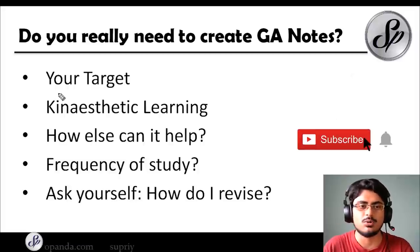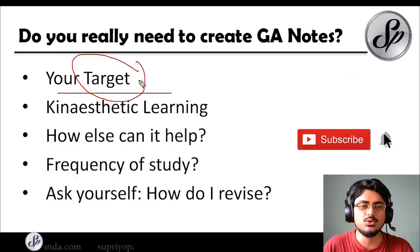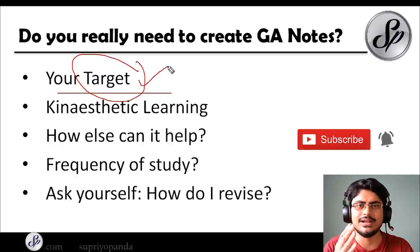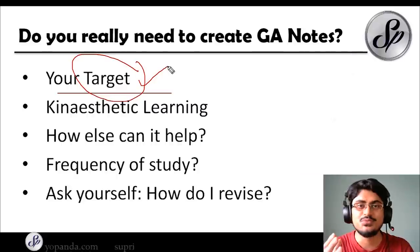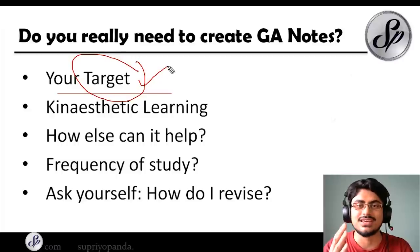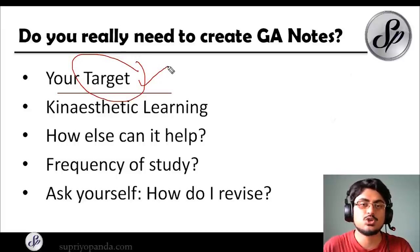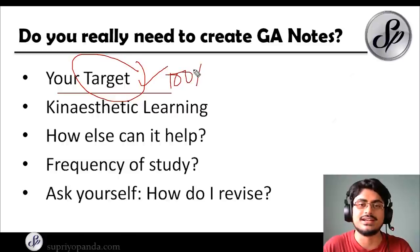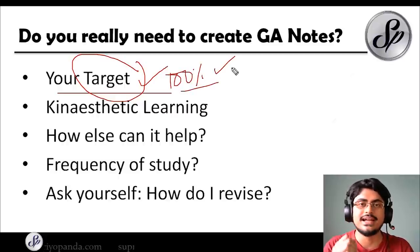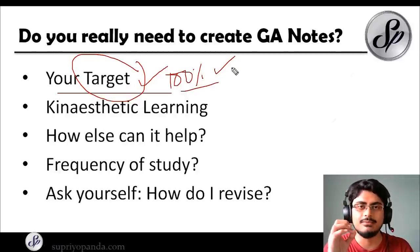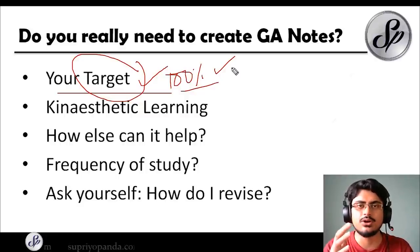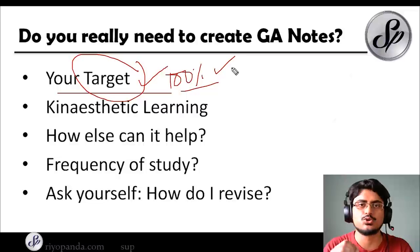Before we begin, I want to talk about targets. What is your target in a General Awareness paper? If you are targeting less than 100 percent, then you are mistaken. Your target in the General Awareness section should be 100 percent. You may not achieve that target, but you should aim for maximum marks. I have seen students secure more than 90 percent, even greater than 95 percent. So there is no reason to set the bar low.